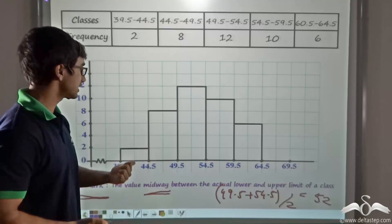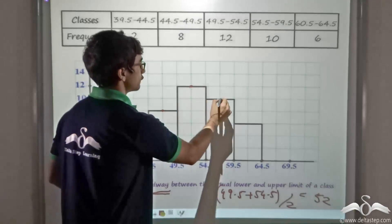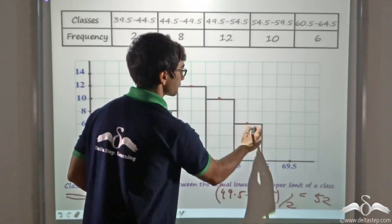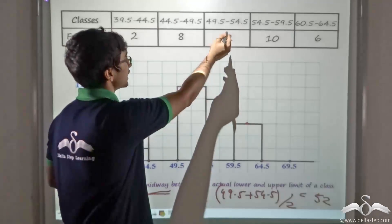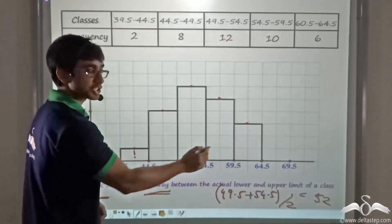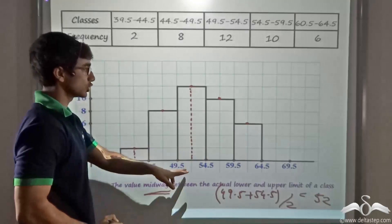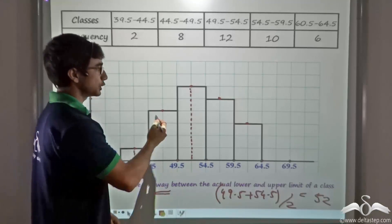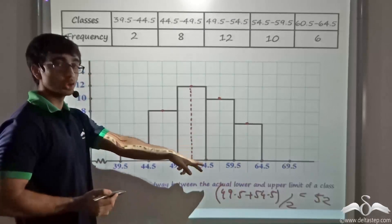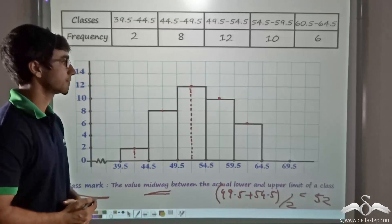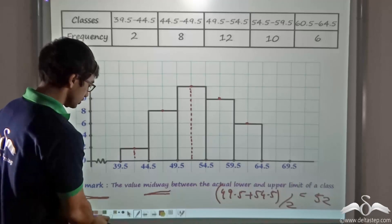How can the class mark be read from the histogram directly? If we consider the midpoints at the top of each bar of the histogram, these points give us the class marks. For the third class the class mark is 52, so this point on the x-axis corresponds to 52. Similarly you can find the class marks for all other classes. Now by joining the class marks, we get another structure.